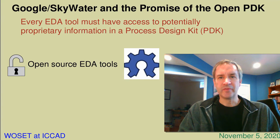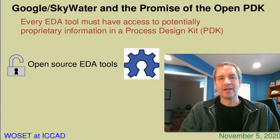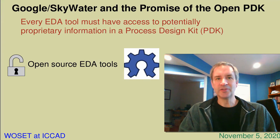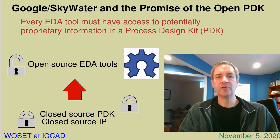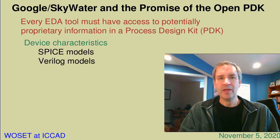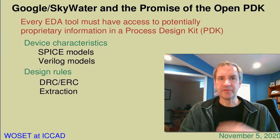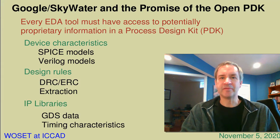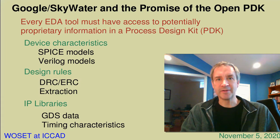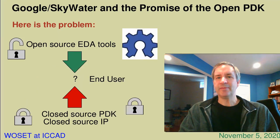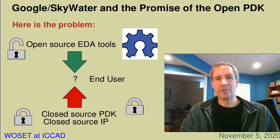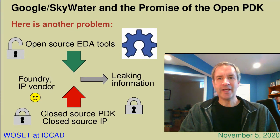The problem with the use of open source tools for making chips is well known. These tools are not like the open source tools used for making documents or so many of the things open source software is used for these days, in one key aspect: they rely entirely on closed source data to run. Every tool must access a process design kit, aka PDK, which describes a specific foundry process in terms of device characteristics.